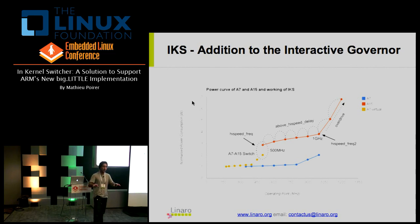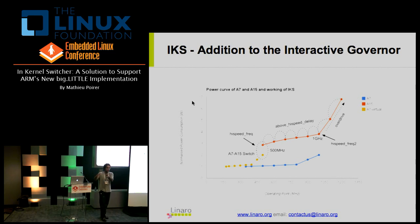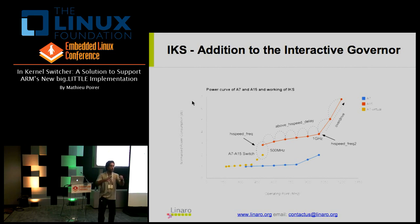This is the same algorithm as the original interactive governor, just duplicated, and it allowed us to make significant power savings. Our first high-speed frequency was set to 500 MHz, which meant that below 85% CPU load we ran on the A7 cluster. Above 85% load we would use the first six operating points on the A15, and only above 95% load would we reach the overdrive point — maximum power.